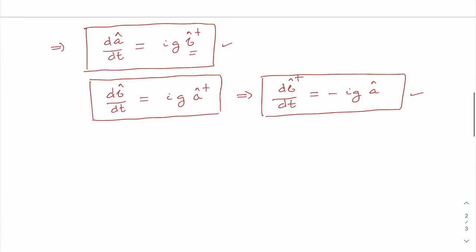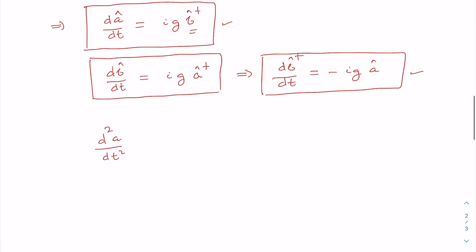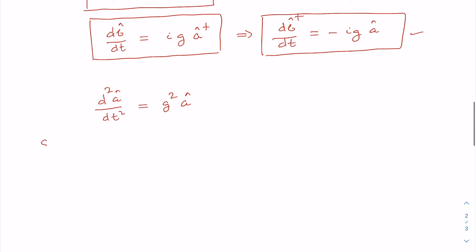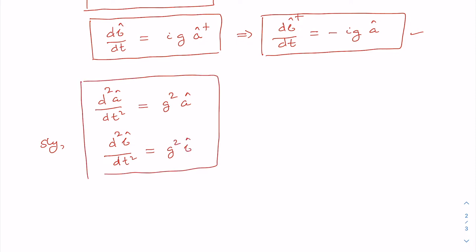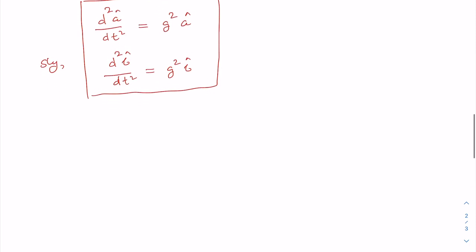Using the coupled equations, we can derive a second-order differential equation for a: d²a/dt² = z² a, and similarly for b: d²b/dt² = z² b.